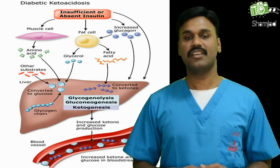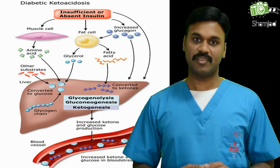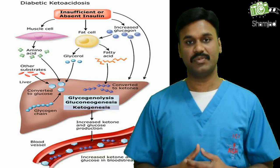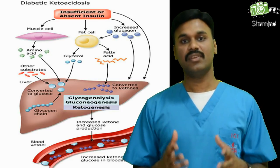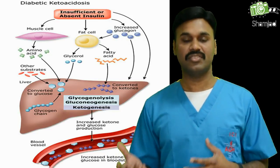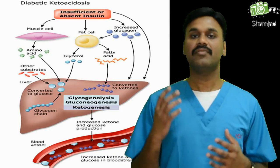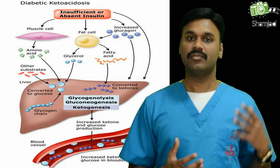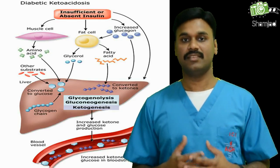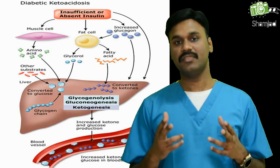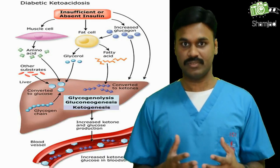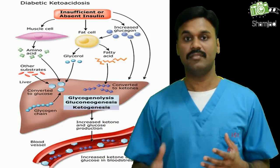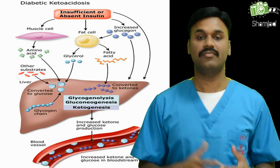Do you know where the ketones are coming from? Let me explain. Sugar is the major source of energy for muscles and other body tissues. Insulin allows the sugar to enter the cells where it can be converted to energy. Without enough insulin, the body cannot utilize the sugar, so it will start to break down fat as a fuel. As a byproduct of this process, an acid will form called ketones. If there is more acid, it will turn to acidosis and eventually lead to diabetic ketoacidosis if untreated.